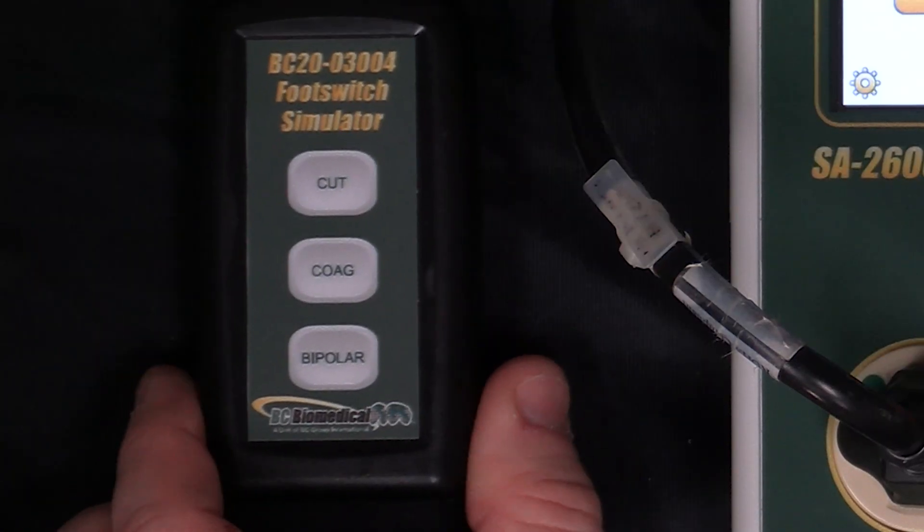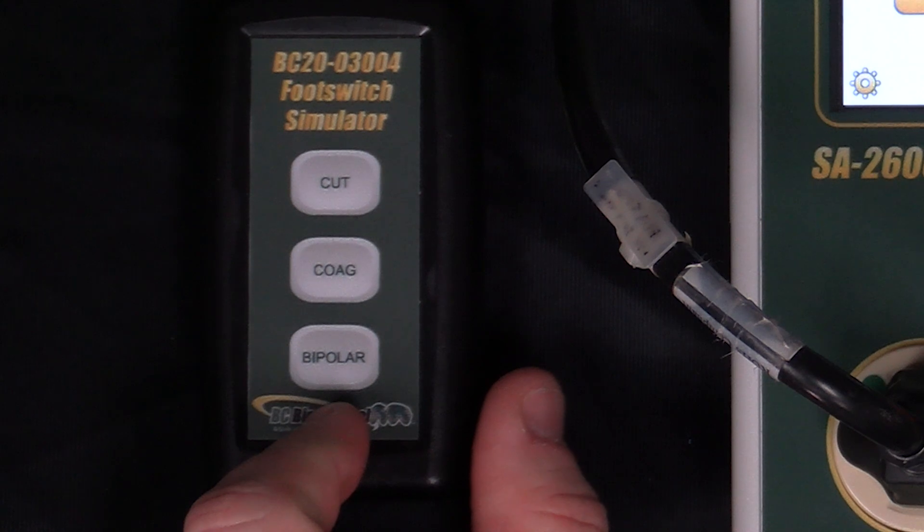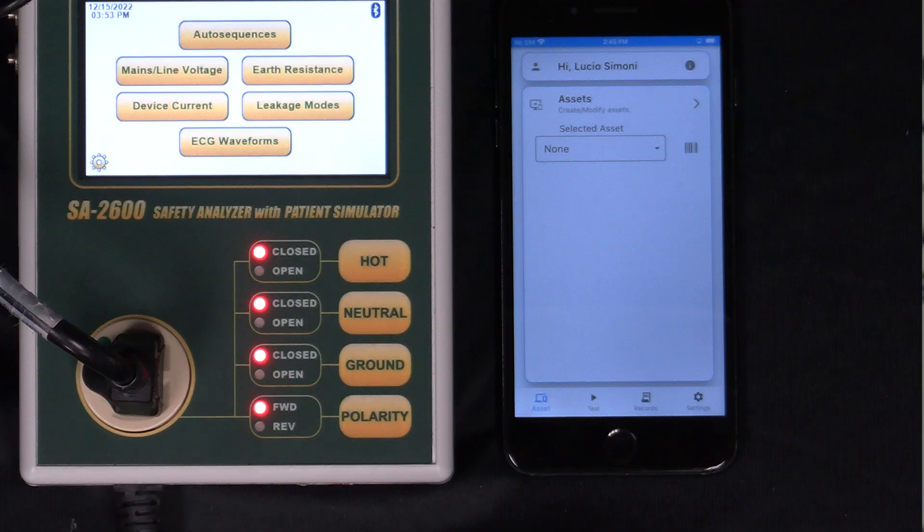I have a footswitch simulator so that I can trigger the output of my generator. And I have a phone running MyBC Mobile. This could either be an Apple or Android device. In this case we have an iPhone.